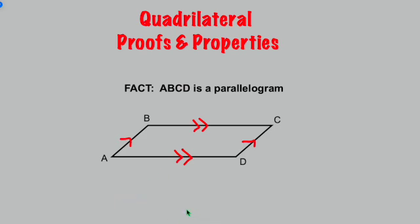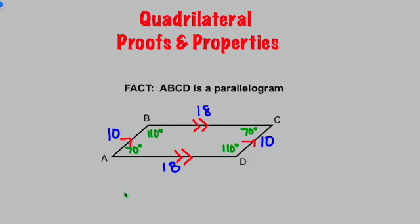It also turns out that a parallelogram has properties that are also true. For instance, opposite sides are not only parallel but they're also congruent. So if this side was 10 units long, the opposite side C-D would be the exact same length — same thing for top and bottom. Let's say this was 18 units long; the bottom would be as well. Also, if we take angle A and it was 70 degrees, the property is that opposite angles have the same measure, so the opposite angle must be 70 degrees as well. And two angles that are adjacent or consecutive are always going to be supplementary. So angle C and D must add up to 180 degrees: 180 minus 70 is 110 degrees. These are some of the properties that are true about a parallelogram that are not actually part of the definition.